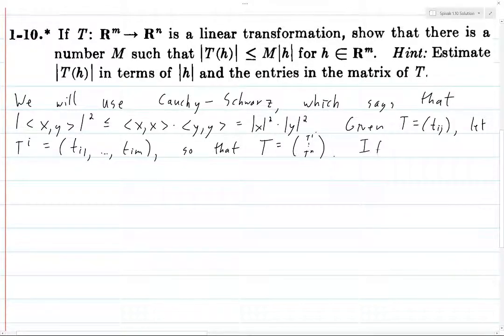So let tau be the maximum, here I'll write it down here. So if we're going to let tau be the maximum over all i, so i is going to be ranging over the different rows, so i is going to be between 1 and n, and j is going to range over the columns, so j will be between 1 and m. We're going to take the maximum of the absolute value of t_ij.